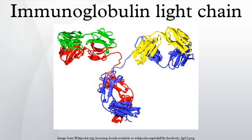The divergence of the Ig isotypes preceded the radiation of tetrapods. The sigma isotype was lost after the evolution of the amphibian lineage and before the emergence of the reptilian lineage. Other types of light chains can be found in lower vertebrates, such as the iota chain of chondrichthyes and teleosts.